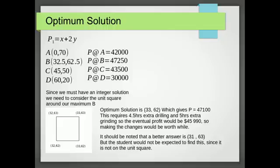And that's obviously going to be better than 32, 62 because obviously I'm making one more rod. So that gives me my optimum solution. And that gives a p-value of 47,100. Bear in mind that requires an extra four and a half hours drilling and an extra five hours grinding. And so we need to take off those costs. So that gives us 45,990. That was better than the 45,000 we had made originally. So it does make sense to make that change.